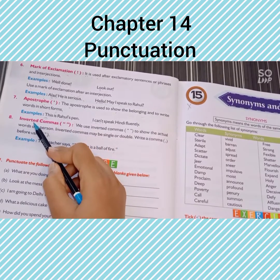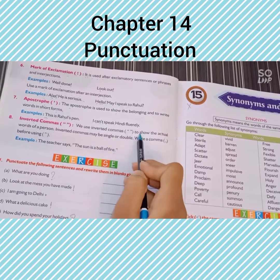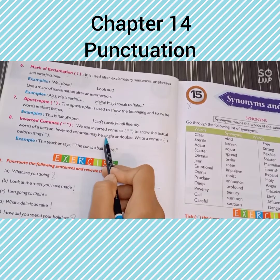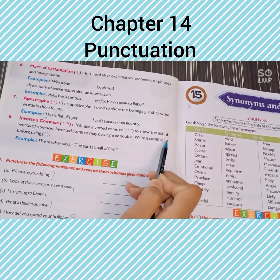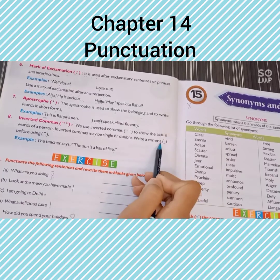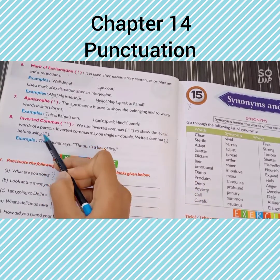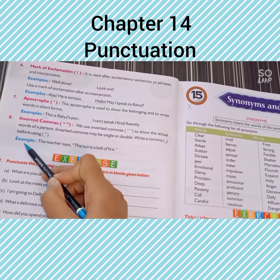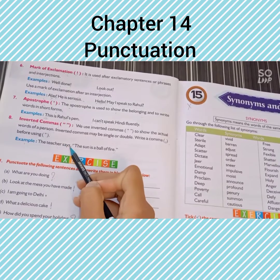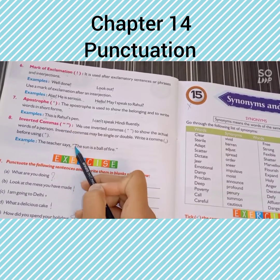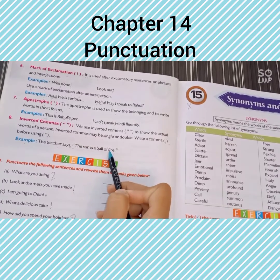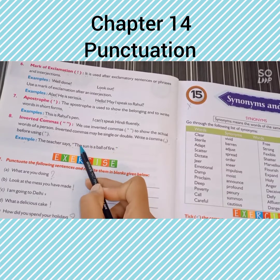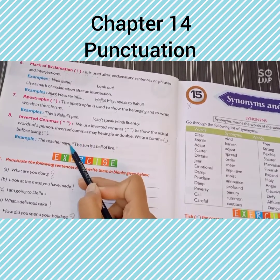Eight number point is inverted commas. We use inverted commas to show the actual words of a person. Inverted commas may be single or double. Write a comma before using inverted commas. Example: The teacher says, "The sun is a ball of fire." — sun आग का गोला है, इस बात को inverted commas में लिखा है, और inverted commas से पहले comma का use किया गया है।